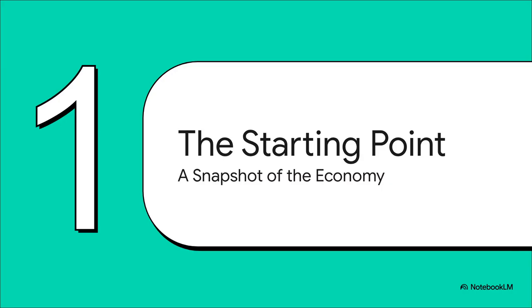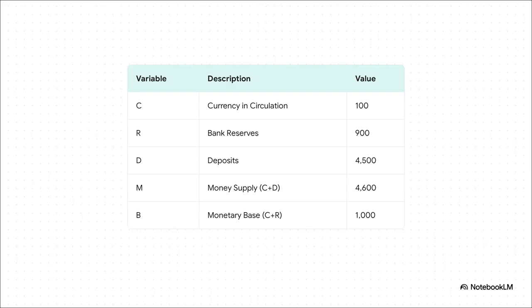First things first, before we get to the action, let's take a quick snapshot of our little model economy. This is our baseline — the before picture. C is the cash people are holding. R is the reserves that banks have tucked away. And D is what everyone has in their bank accounts — their deposits. The total money supply M is just cash plus deposits. But the really important one to watch is B, the monetary base — that's cash plus bank reserves. For us, it starts at 1,000. Keep your eye on that number.